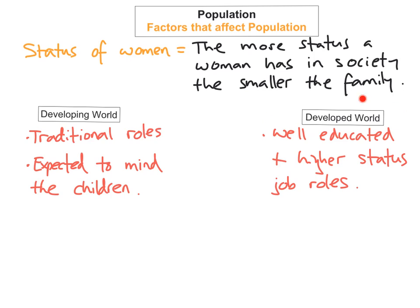However, in developed countries, women are much more educated, and because their education is so improved, they are able to seek higher job roles. Because of their higher status they go and get those higher job roles, and because of the pressures and time it takes to manage these jobs, they don't have as much time to look after a larger family. So they usually have a smaller number of children.